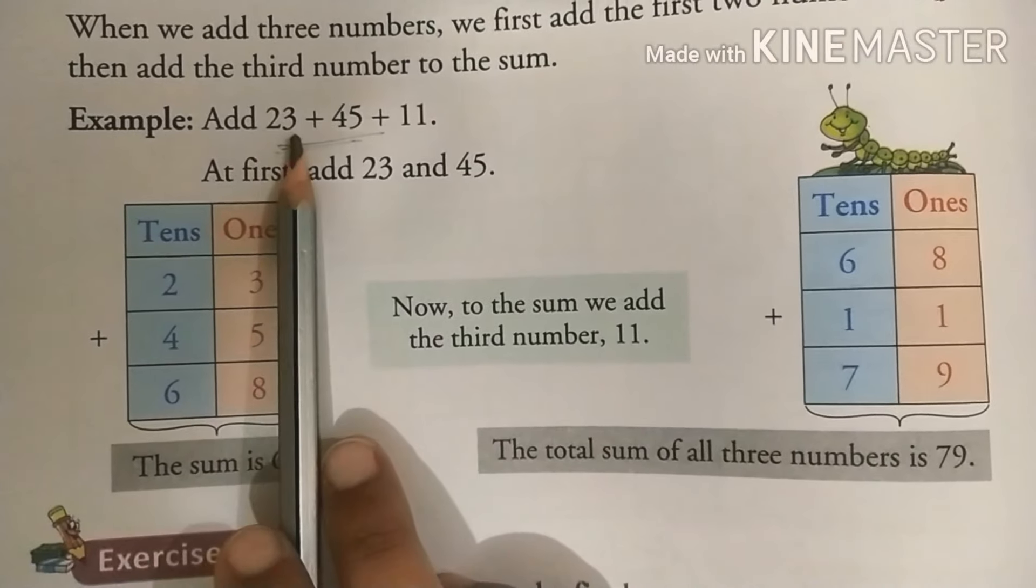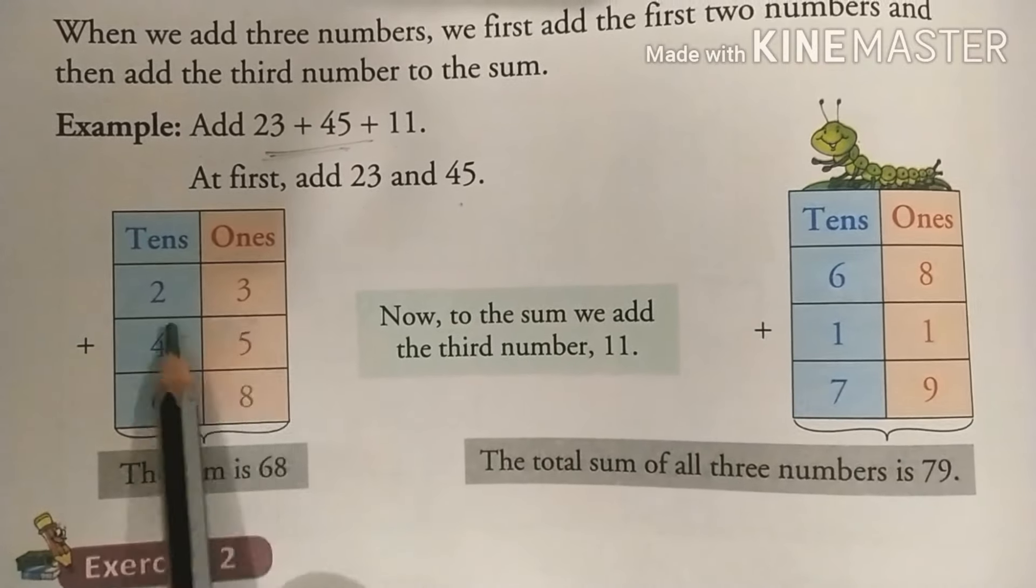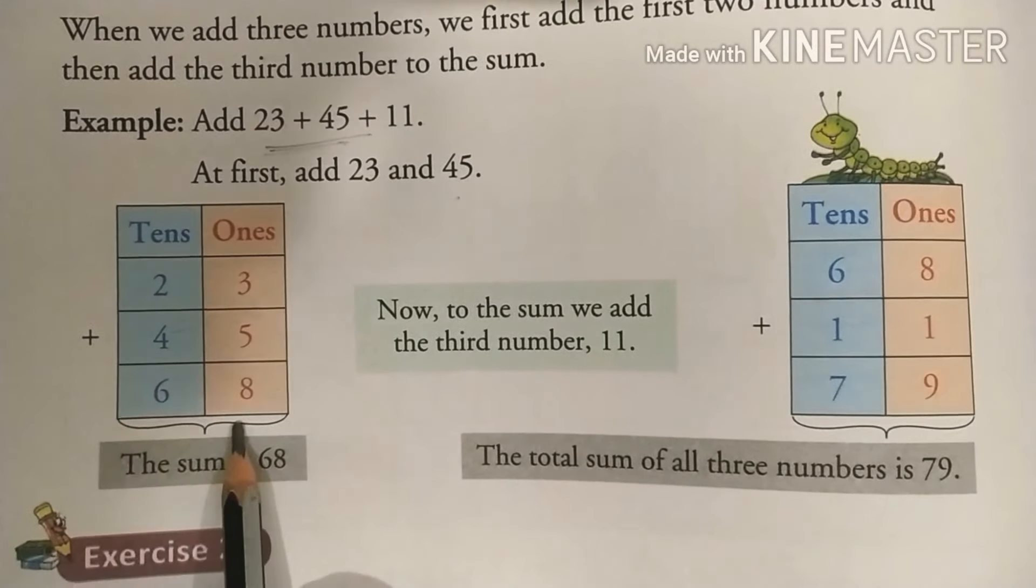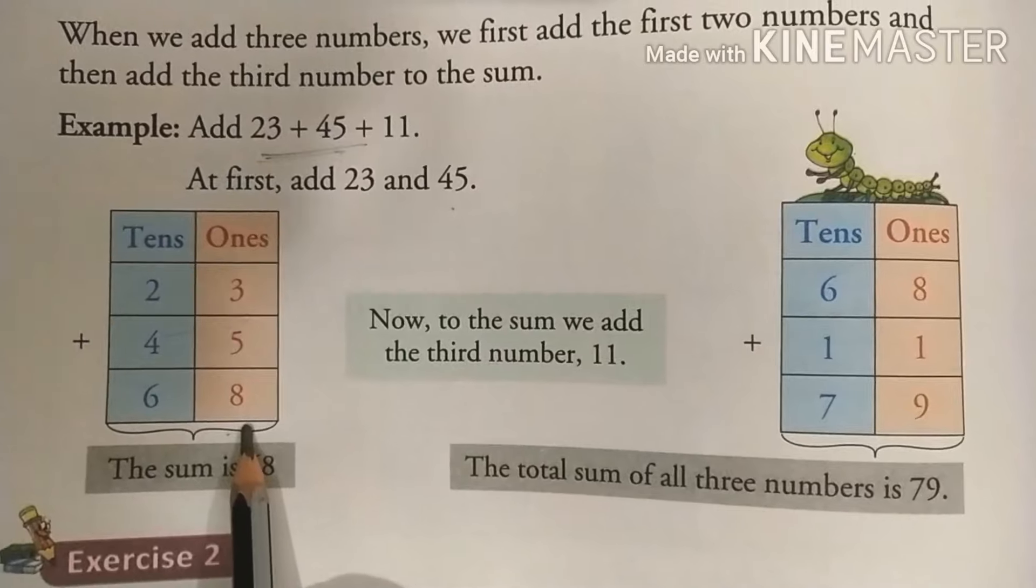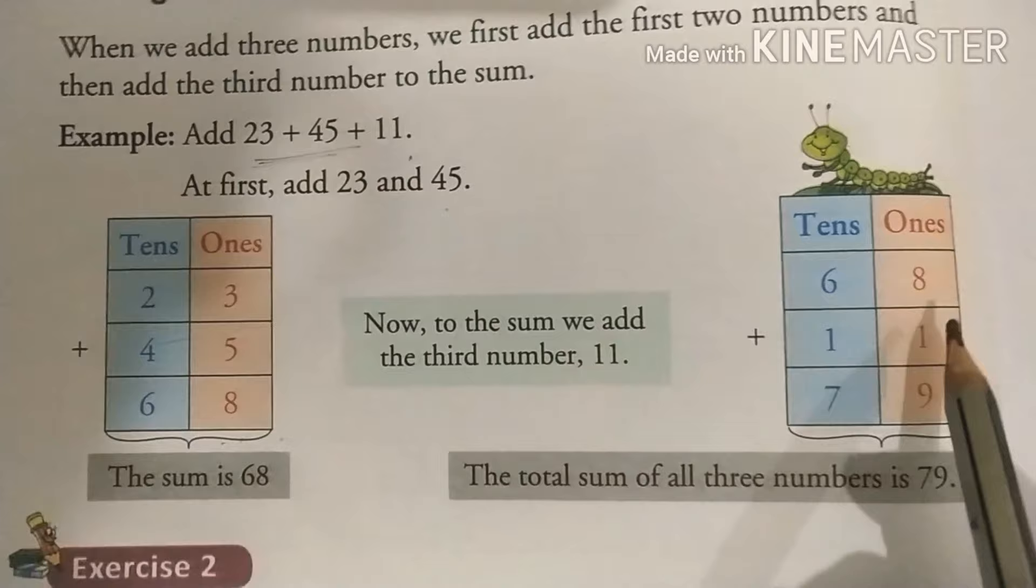At first 23 plus 45, we will add 23 plus 45. Here you can see 23 plus 45 is equal to 68. So now, ab kya hai humara ki ab 68 mein is 3rd number ko bhi add karenge.